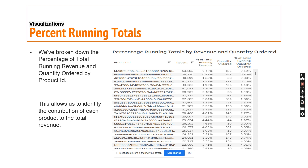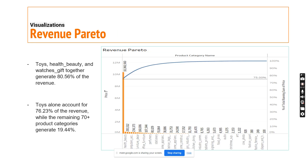With regards to percent running total, the breakdown has been done based on the product ID. This percentage running total helps provide valuable insights into the contribution of each product. Moving on to the Pareto analysis.